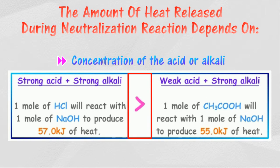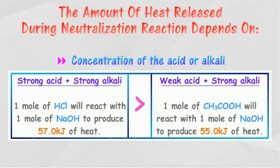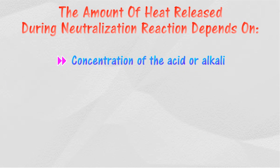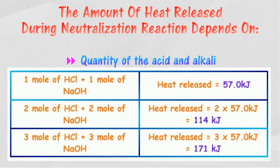The heat released in the reaction of a strong acid with a strong alkali is higher than the heat released in the reaction of a weak acid with a strong alkali. This is because, in the neutralization reaction between a weak acid and a strong alkali, heat must be absorbed to overcome the bonds in the weak acid molecule in order to ionize it. The quantity of heat released in the neutralization reaction is also directly proportional to the quantity of acid and alkali used.